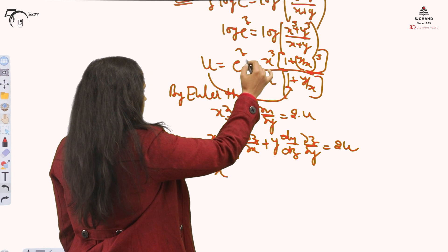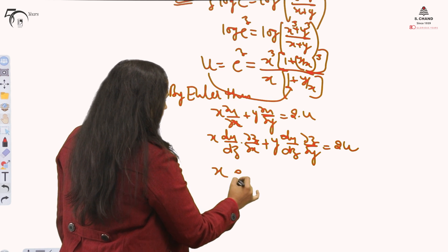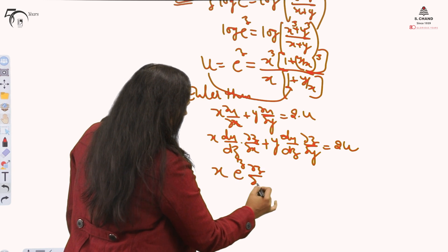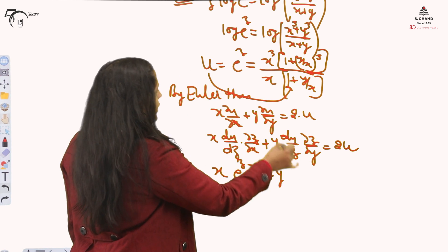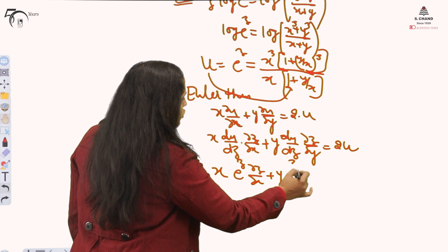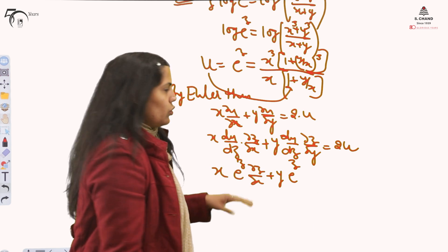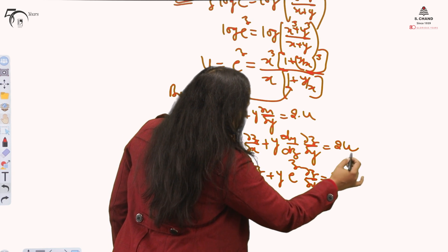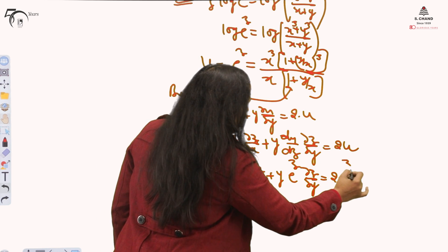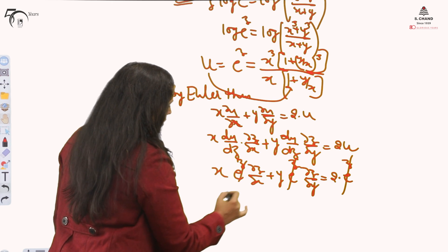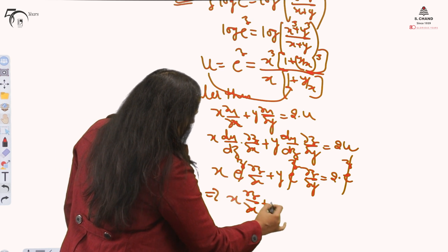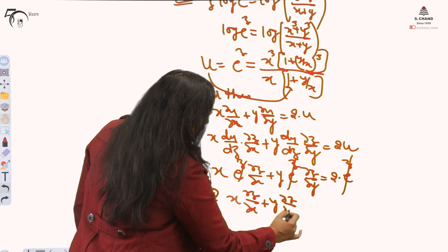Because first you will differentiate it with respect to z, and then you will move to y. Equal to 2u. Then x, what is du by dz? That is e to the power z, del z by del x, plus y du by dz again, because e to the power z derivative is e to the power z only, del z by del y. 2u, and that u value is e to the power z. e to the power z gets cancelled and we got our result.